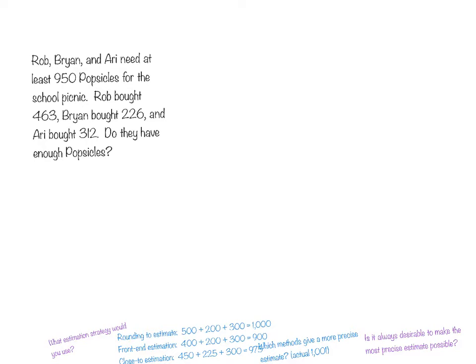This particular problem that we are going to do now is a number story that uses the same numbers that were used in the previous problem, but it has a different context that will influence how we should estimate. Let's take a look at the problem. Rob, Brian, and Ari need at least 950 popsicles for the school picnic. Rob bought 463, Brian bought 226, and Ari bought 312. Do they have enough popsicles?